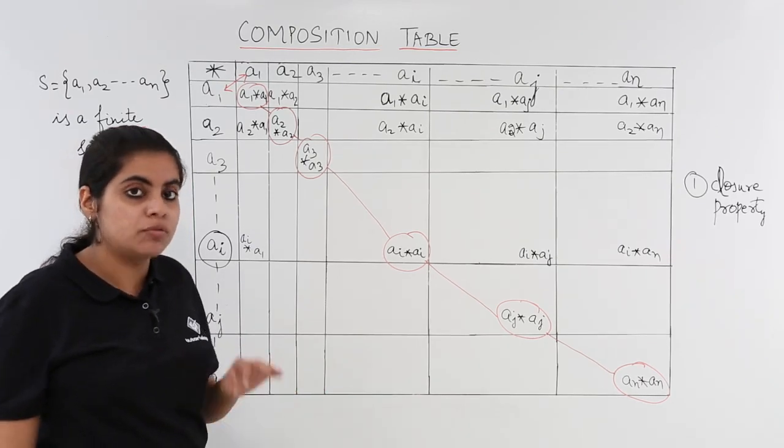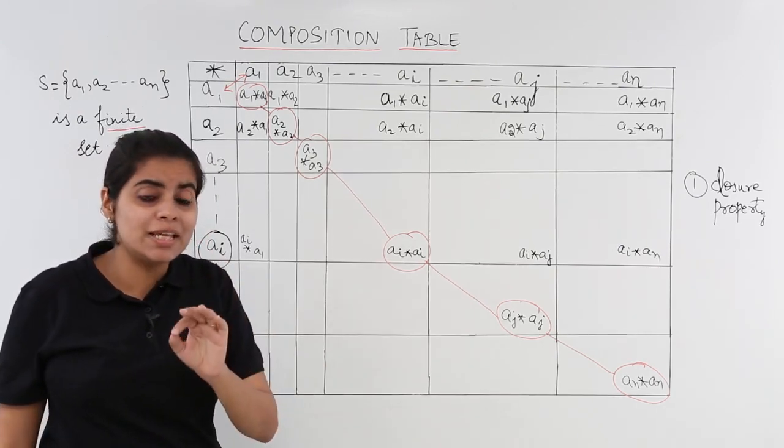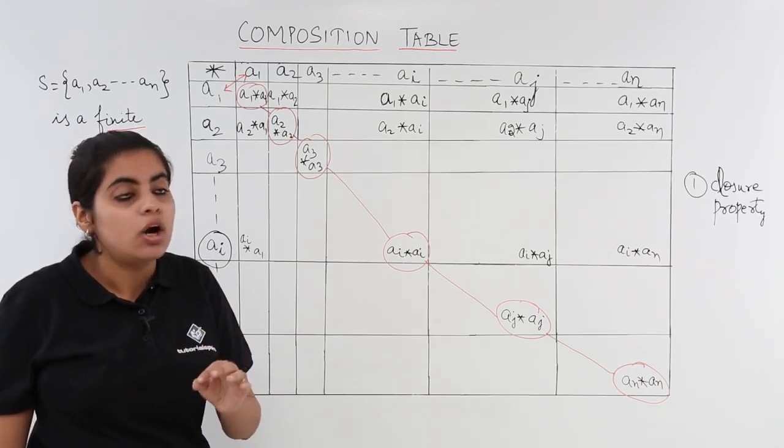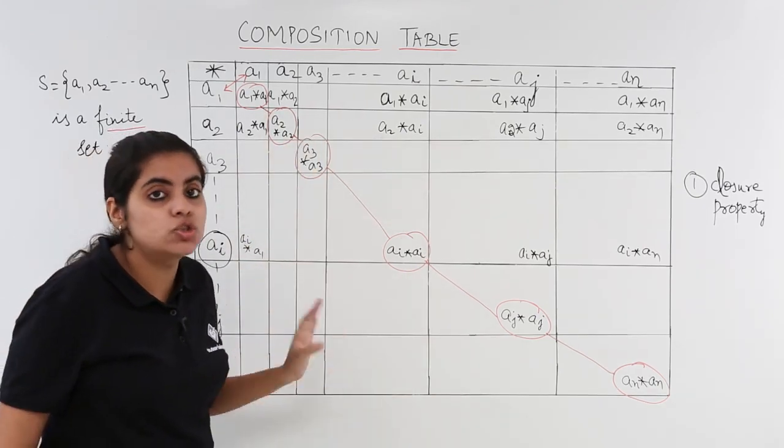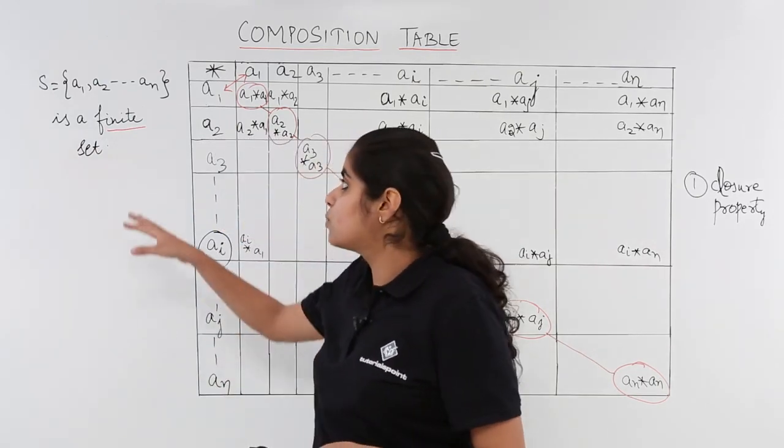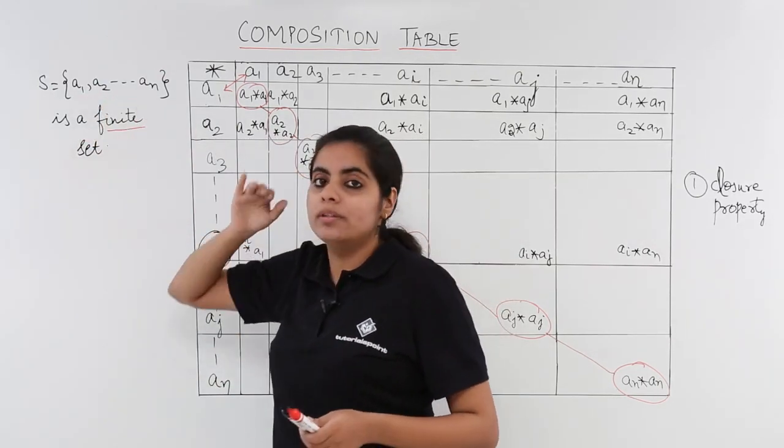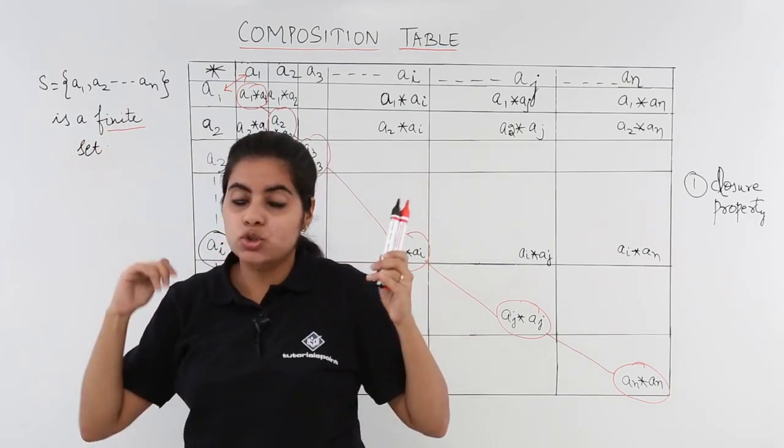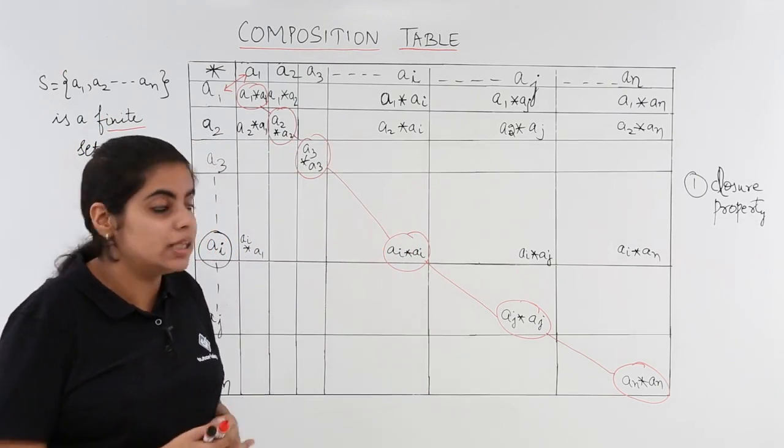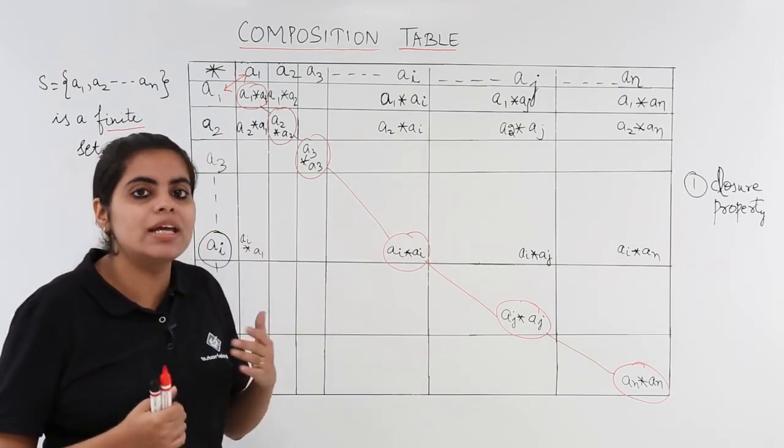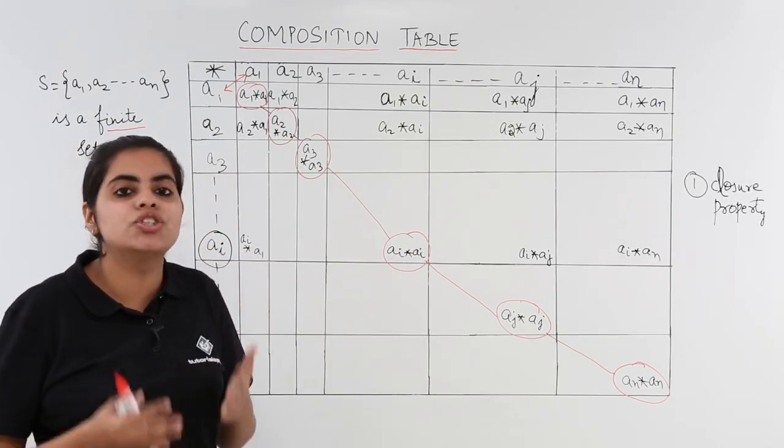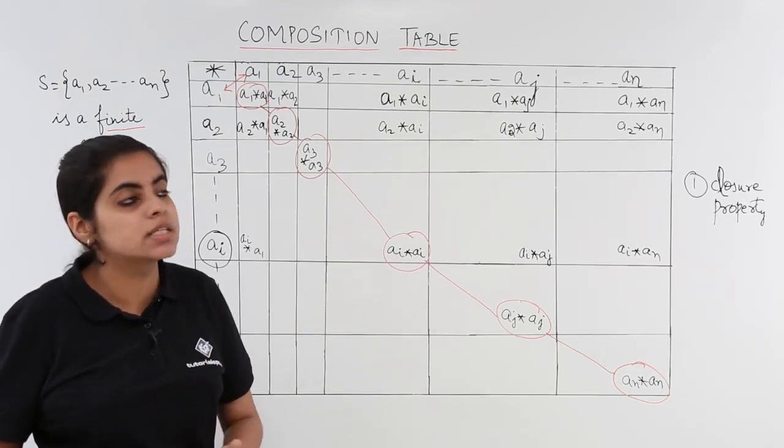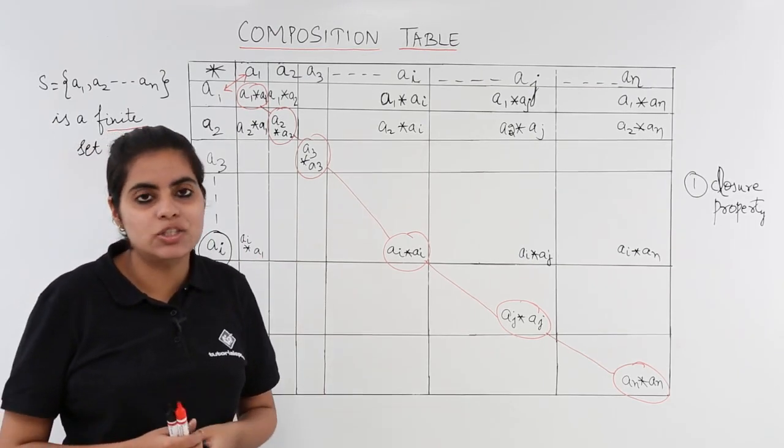One more thing for closure property to be followed, except the fact that repetition should not be there. One more thing is there that all the elements should belong to the set only. Remember the set was what? a1, a2, then ai, then aj, then an. So nothing beyond this scope, it should be always related to that only. Similarly, we would be checking from few examples how to check the commutativity, existence of inverse and identity elements from this composition table in the next videos.